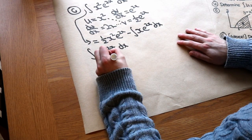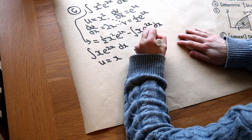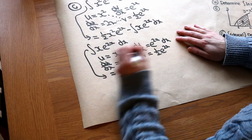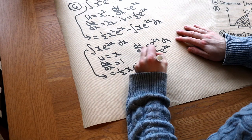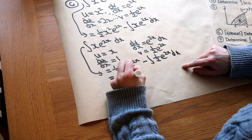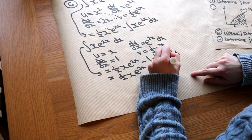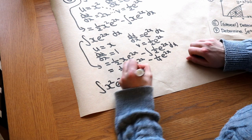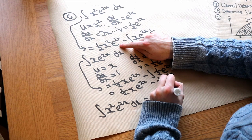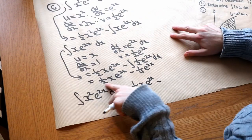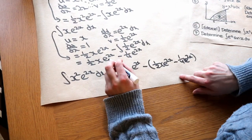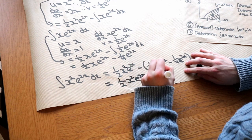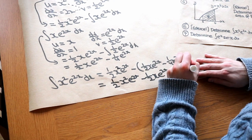Working out the sub-result separately: u = x, dv/dx = e^(2x), so du/dx = 1 and v = ½e^(2x). This gives uv = ½x·e^(2x), minus the integral of 1·½e^(2x) dx = ½x·e^(2x) − ¼e^(2x). Substituting back: the full result is ½x²·e^(2x) minus (½x·e^(2x) − ¼e^(2x)), which simplifies to ½x²·e^(2x) − ½x·e^(2x) + ¼e^(2x) + c.